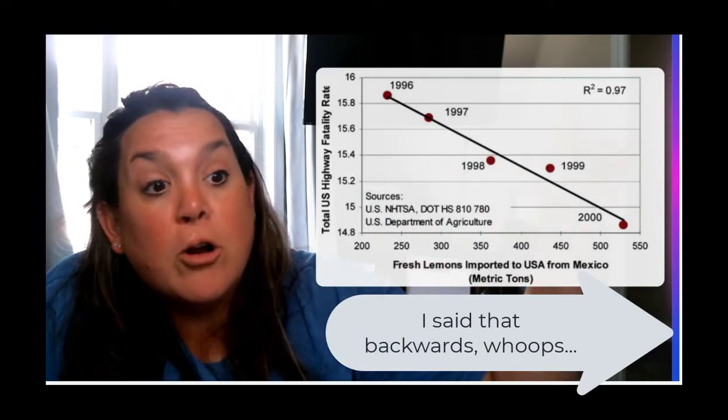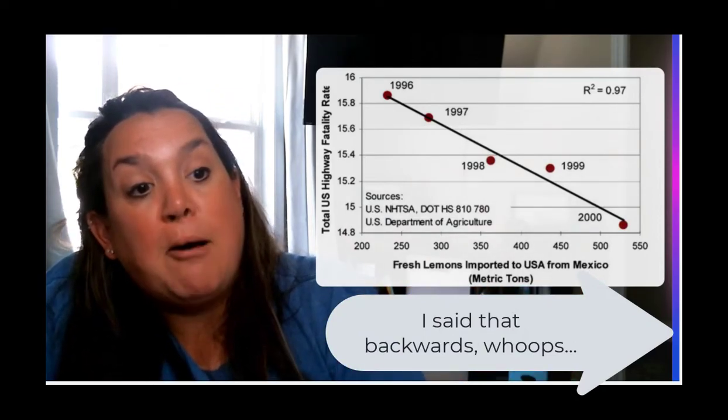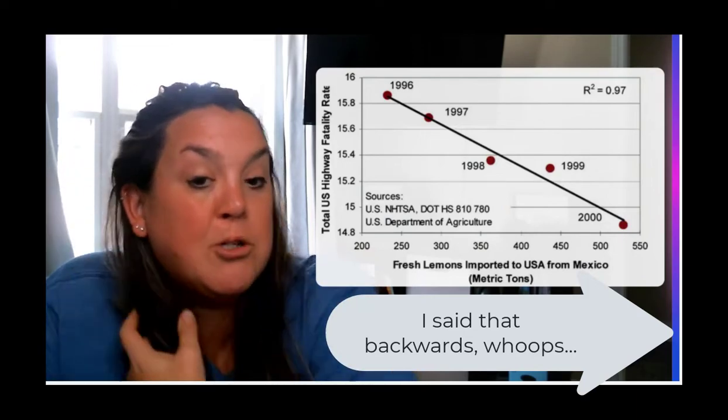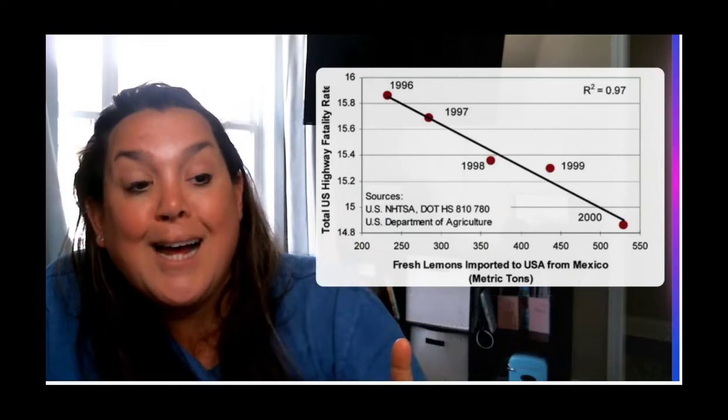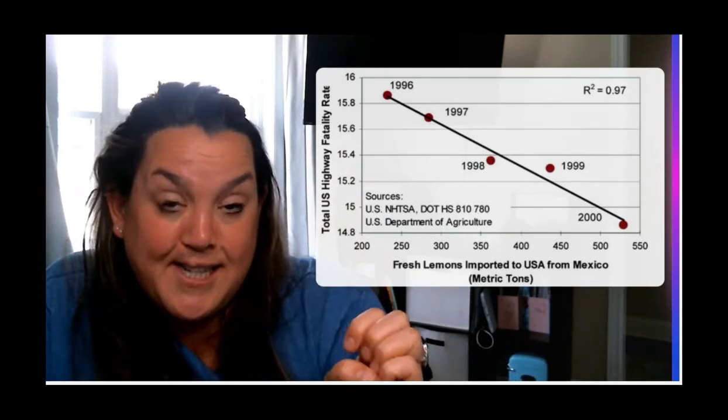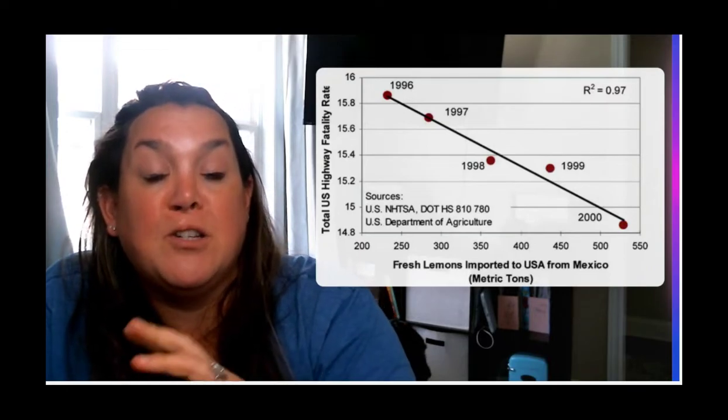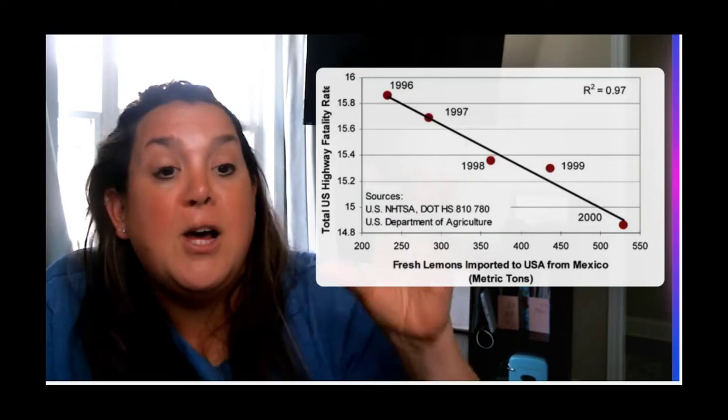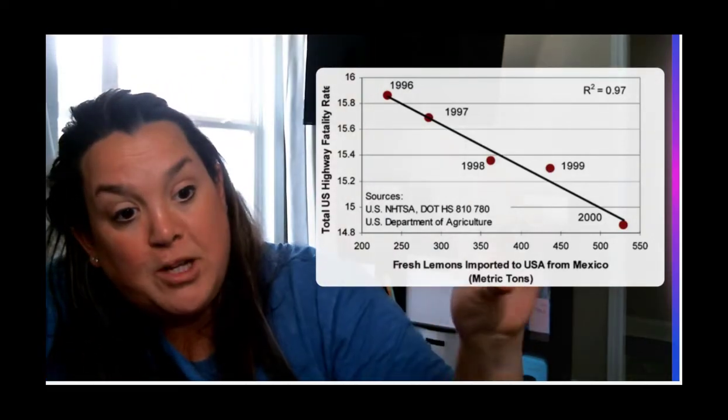And I want to point out to you that it's positive because remember, it's the squared value. R itself is going to be the square root of that, so R would be negative because this is a negative association.